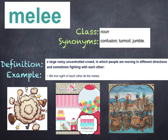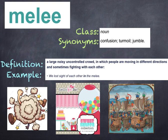This week's word of the week is 'melee.' It's a noun, and synonyms are confusion, turmoil, and jumble. The definition: melee means a large and noisy, uncontrolled crowd in which people are moving in different directions and sometimes fighting with each other. For example, we can use it in a sentence like: 'We lost sight of each other in the melee.'